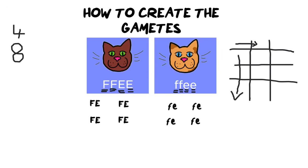When working with these two cats, they have what we call true breeding or pure breeding characteristics. The dark brown cat is homozygous dominant for both fur color and eye color, and the cream colored cat is homozygous recessive for both traits. When you cross them in a dihybrid, there is always only one answer that can come out.